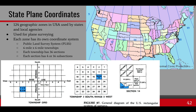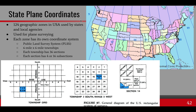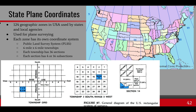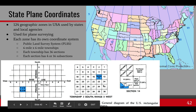Another coordinate system worth covering is the state plane coordinate system, which is a legacy system still prevalent in many agencies. It has 124 geographic zones covered by local states and agencies, determined through surveying. It uses the public land survey system — a six-mile by six-mile township, where each township has 36 sections and each section can have four or 16 subsections.